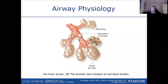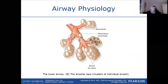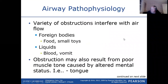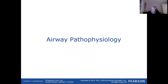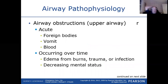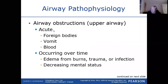A cross-section shows the alveoli are multiple little sacs inside one larger sac, giving more surface area for gas exchange. Pulmonary capillaries are wrapped around each one. Pathophysiology refers to problems with normal physiology. The main airway problem is something blocking airflow. Acute obstructions happen suddenly — from foreign bodies, food, toys, candy, vomit, blood, or the tongue.